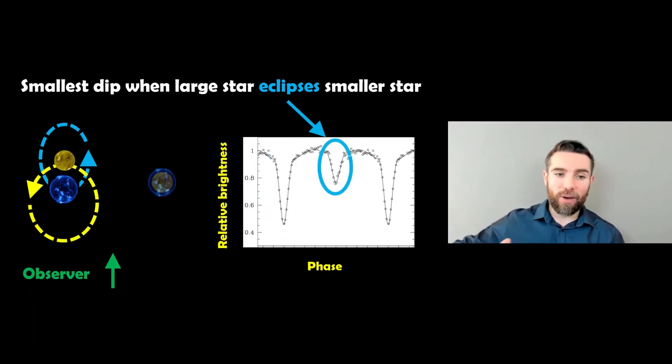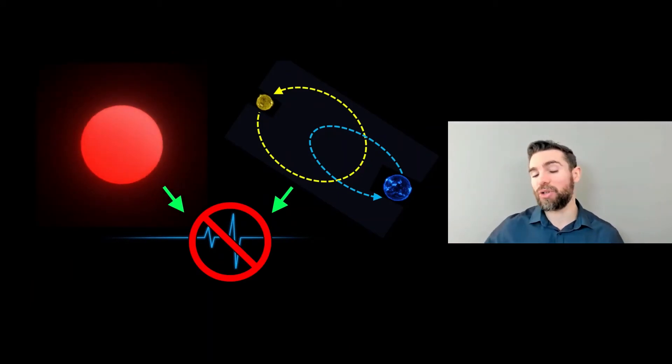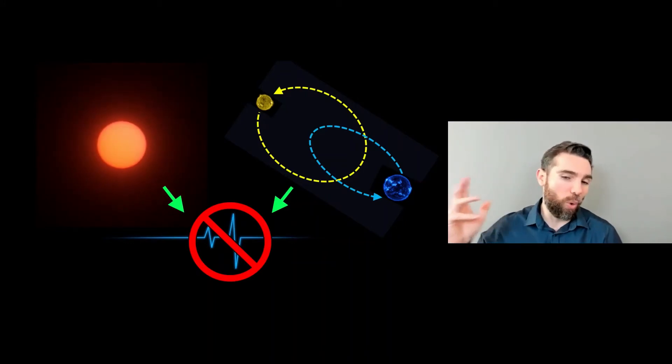When it's the other way round, when the larger star eclipses the smaller star, we get the smaller dip like that. Now, both of those, the pulsating stars and the eclipsing binary stars, do not produce that heartbeat-like structure in the light curve. So what actually is occurring there to give us that sort of shape?